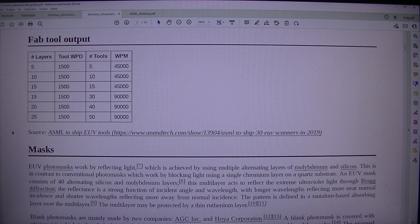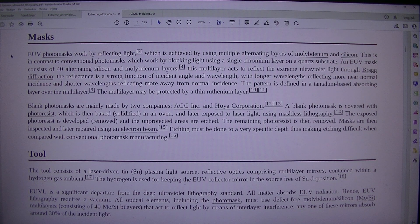Masks: EUV photomasks work by reflecting light, which is achieved by using multiple alternating layers of molybdenum and silicon. This is in contrast to conventional photomasks which work by blocking light using a single chromium layer on a quartz substrate. An EUV mask consists of 40 alternating silicon and molybdenum layers. This multilayer acts to reflect the extreme ultraviolet light through Bragg diffraction. The reflectance is a strong function of incident angle and wavelength, with longer wavelengths reflecting more near normal incidence and shorter wavelengths reflecting more away from normal incidence. The pattern is defined in a tantalum-based absorbing layer over the multilayer.